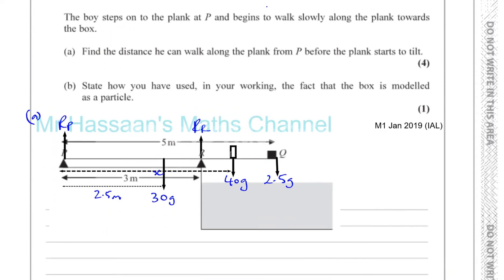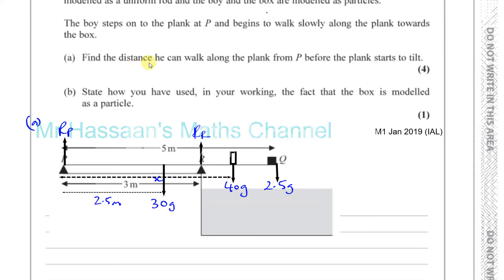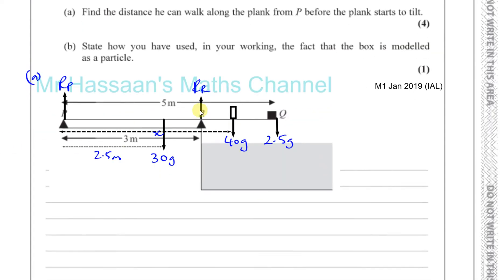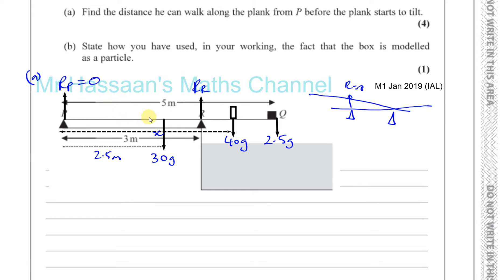The boy steps onto the plank at P and begins to walk slowly along the plank. Find the distance he can walk along the plank from P before the plank starts to tilt. At the time when the plank starts to tilt — just before it starts tilting — the reaction on this support at P will become 0, because the plank is about to lift up from there. So for part A, the reaction at P has to be 0. We want to find how far he can walk such that this first becomes 0.